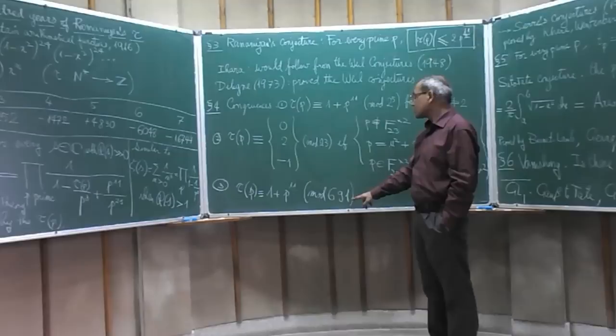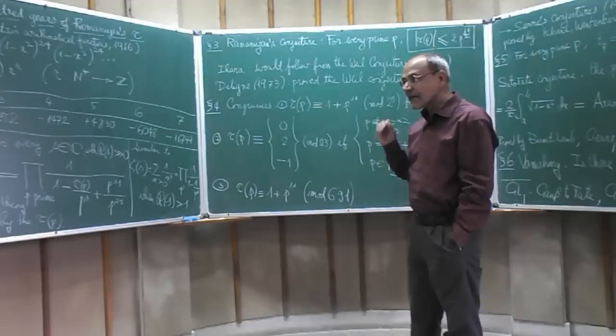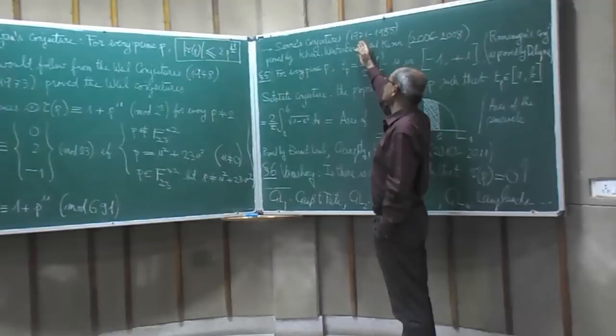Tau of p is always congruent to 1 plus p to the 11 modulo 691. Now these congruences was a list and one didn't quite understand where they come from. Serre is somebody who tried to understand them and he came up with these conjectures about modularity of Galois representations in the years 1971 to 1985.